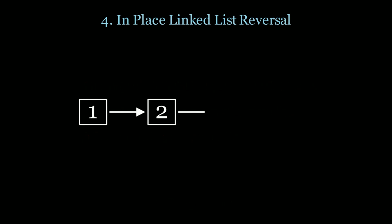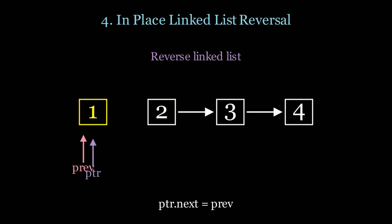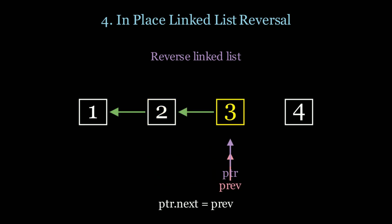Let's see how this works. If I have a linked list and want to reverse it, I'll initialize two pointers: previous and pointer, which is at the current node. At every iteration, pointer.next has to point to the previous node — in this case null. Then we move previous to pointer and pointer to the next node, following the same formula until we scan the entire list.